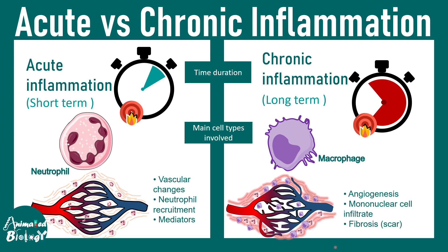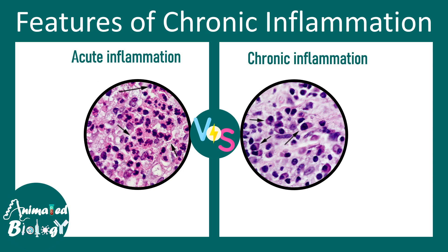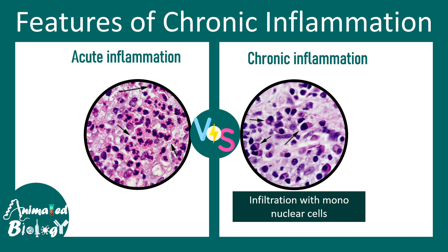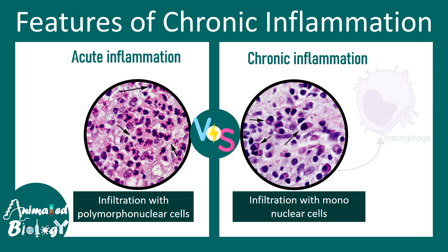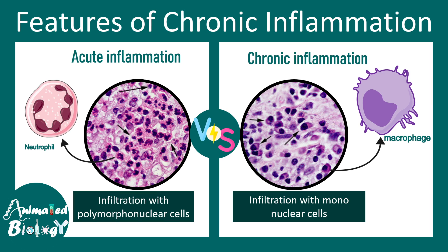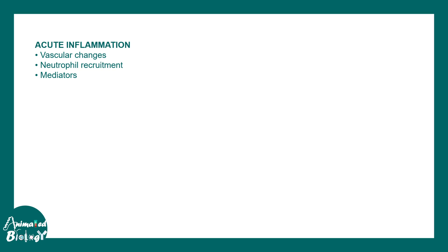From a histologist's perspective, looking at tissue sections, acute inflammation would show mostly neutrophils in the tissue, whereas in chronic inflammation the infiltration of mononuclear cells is very clear. Mononuclear cells are mostly macrophages, while polymorphonuclear cells are generally neutrophils. The vascular changes are also quite distinct between acute and chronic inflammation.